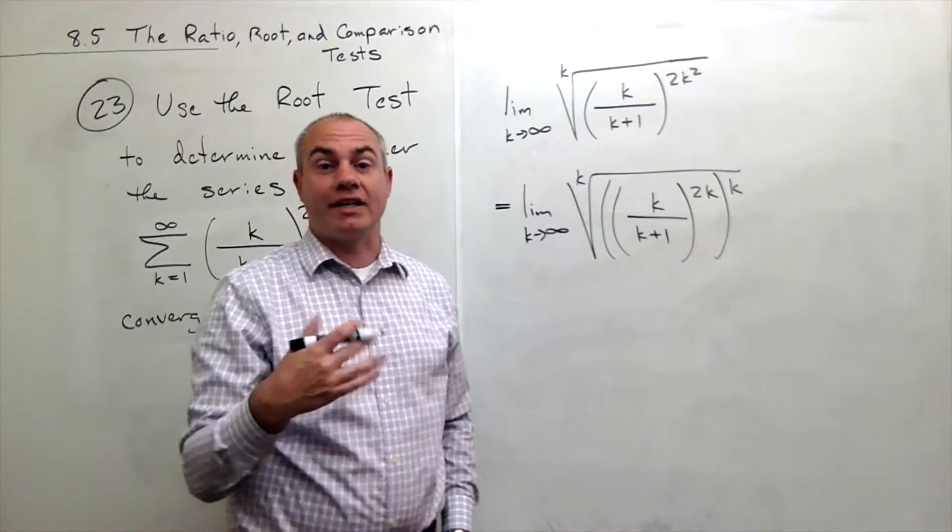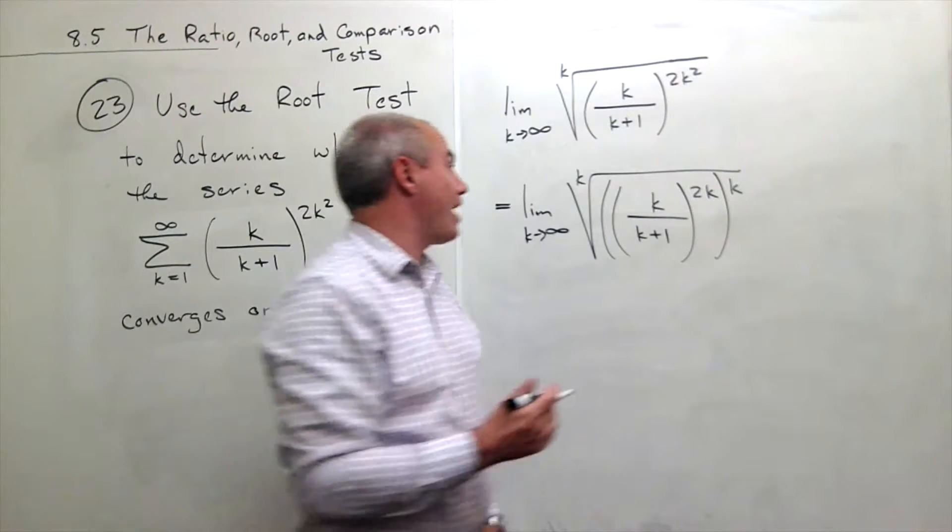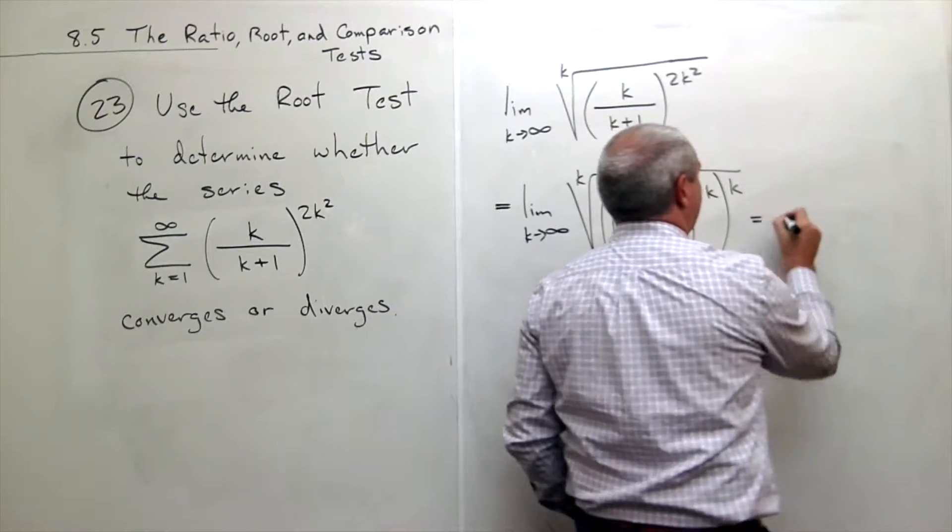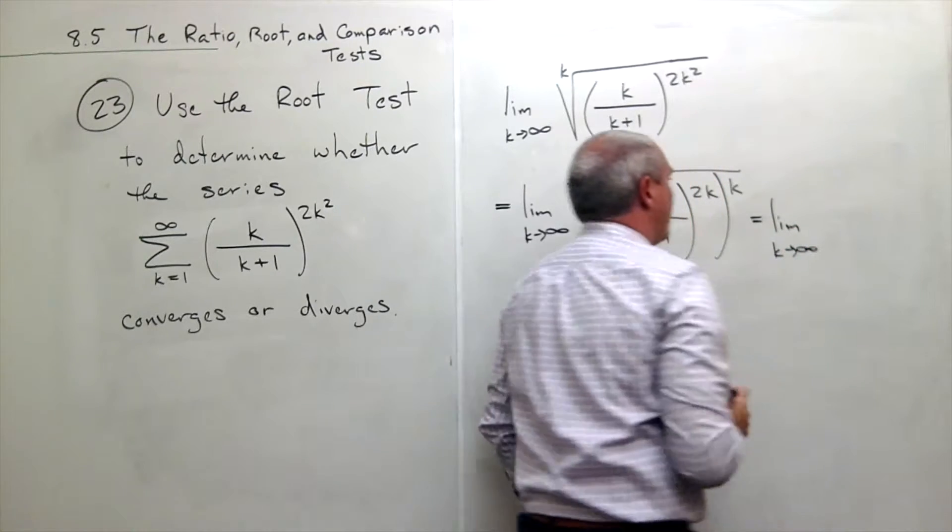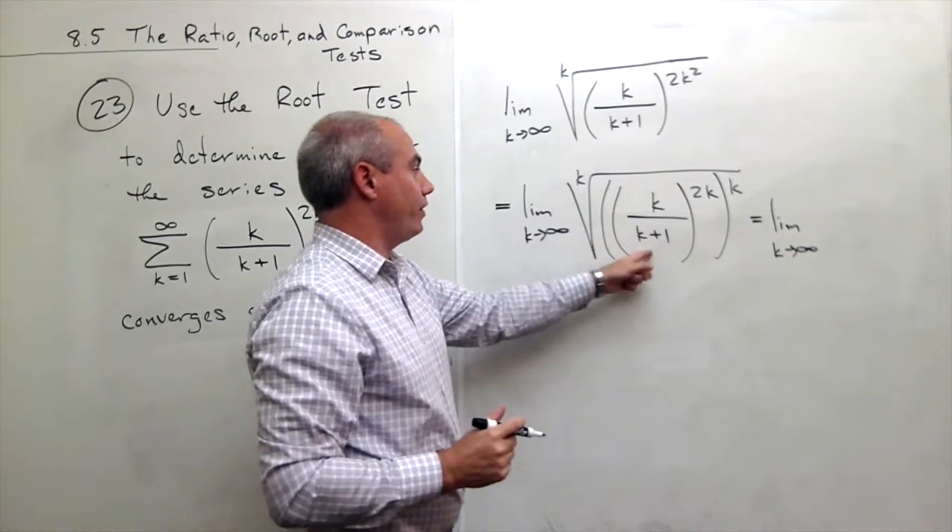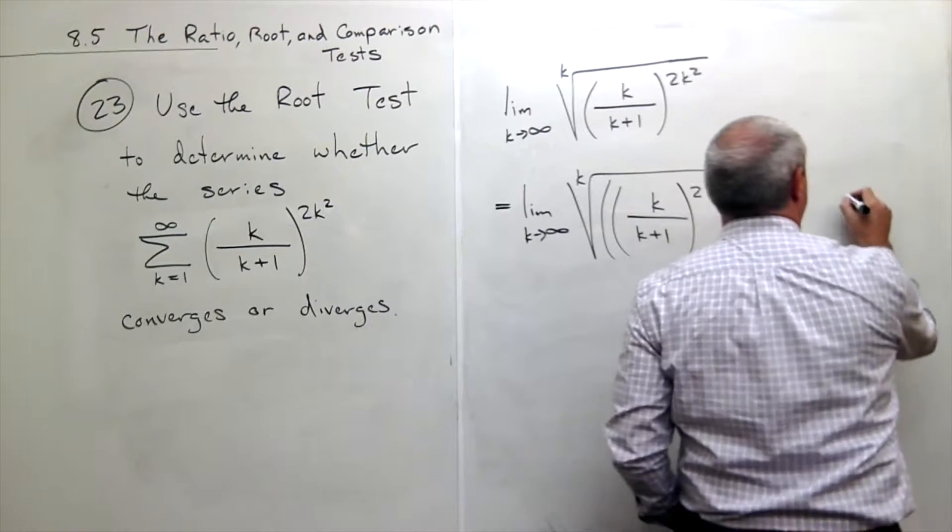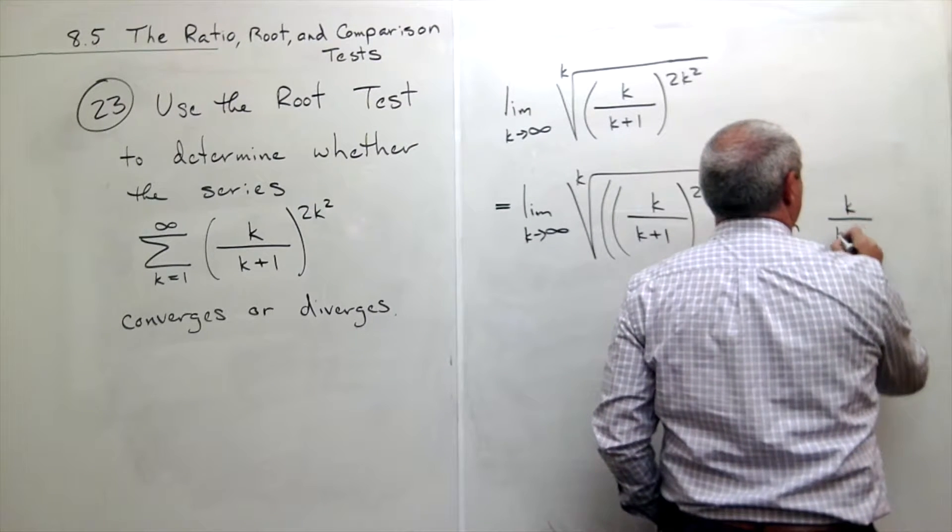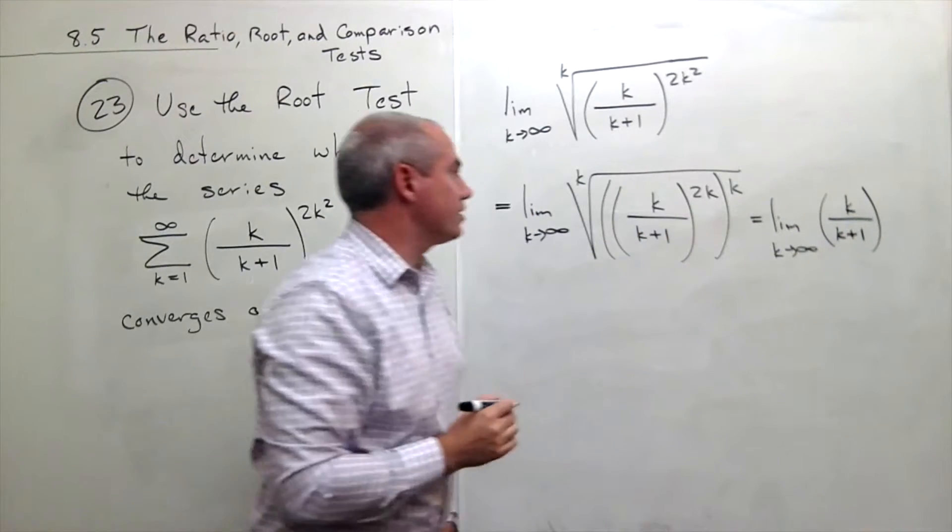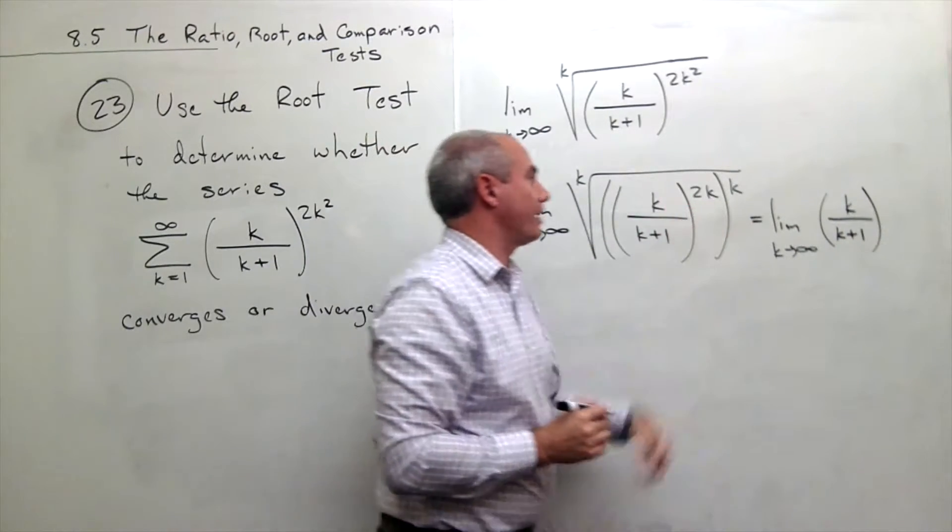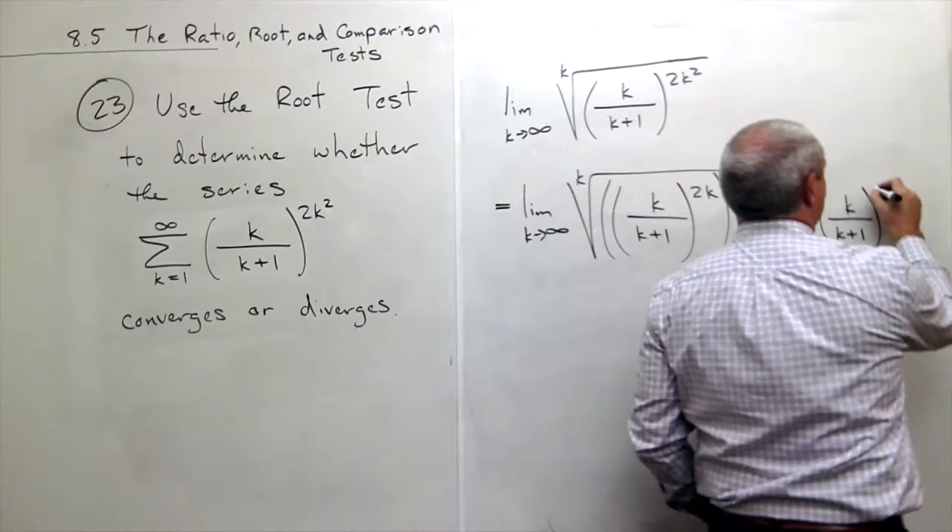something raised to the power. And so I can cancel that kth root and that kth power and I'm just left with the limit as k goes to infinity of k over k plus 1, k over k plus 1 raised to the power 2k.